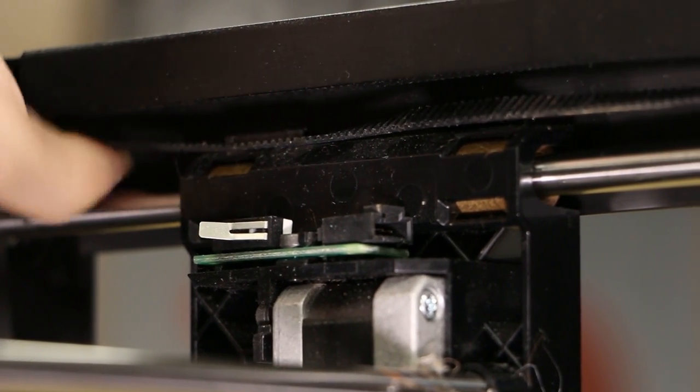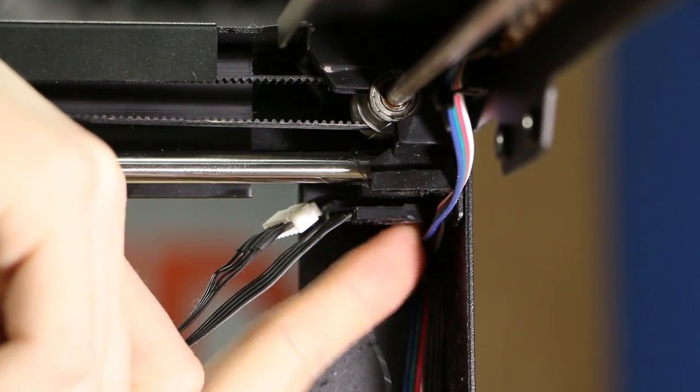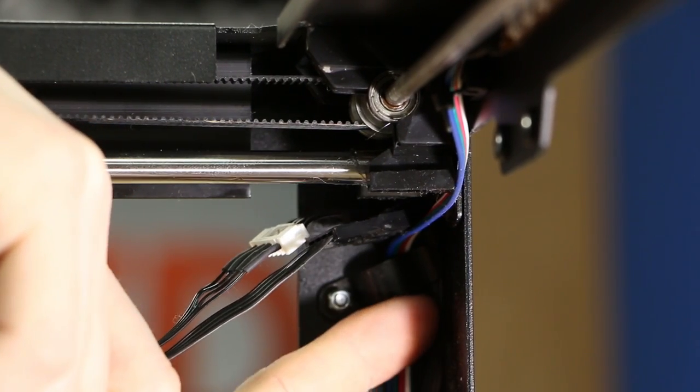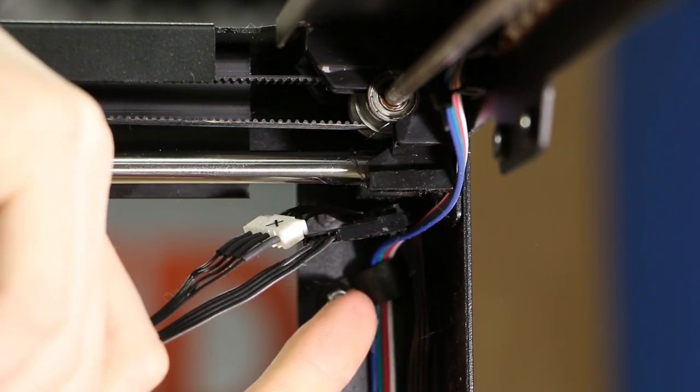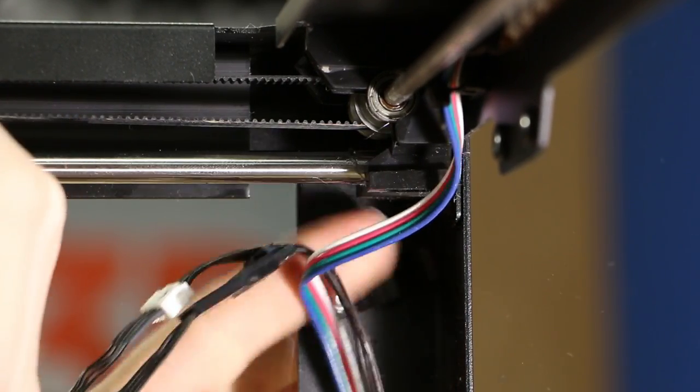On the same side but in the front right corner, we will remove the wires from their holders. You can loosen the small bolts which will allow for the holders to rotate, or you can slide them out as shown. Remove the wires from the first holder.